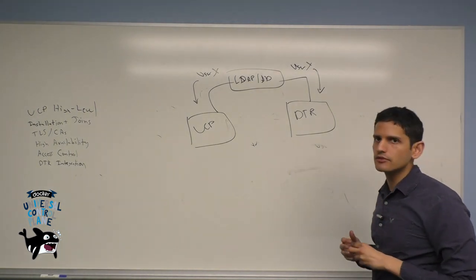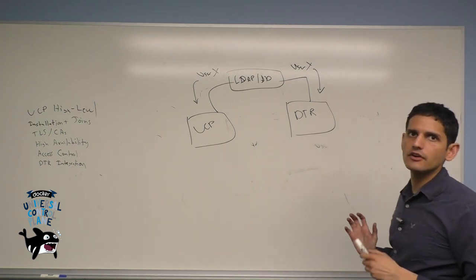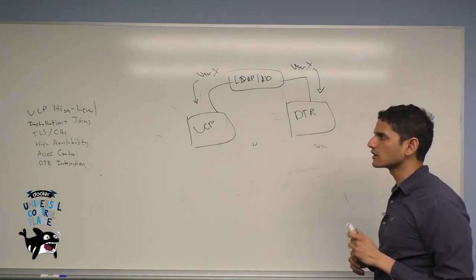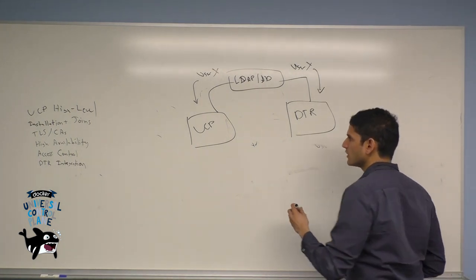Now what you're going to want to do is make UCP and DTR trust each other. In order for this to happen, they both have to have access to each other's certificate authorities.